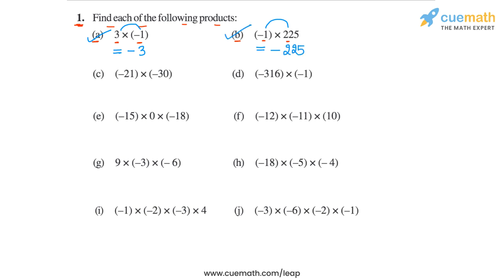Then in part C, we have the product minus 21 into minus 30. Ignoring the negative signs, the magnitude of the product will be 21 into 30, which is equal to 630. And the sign of the product will be positive, because both the integers are negative. So the product will be 630.